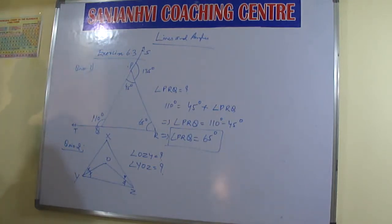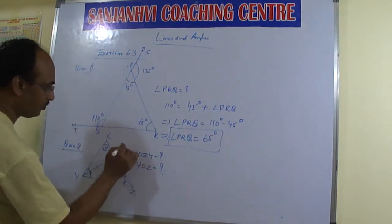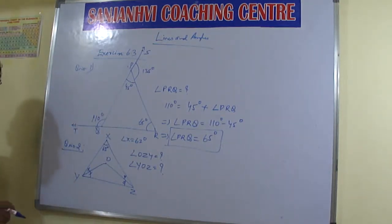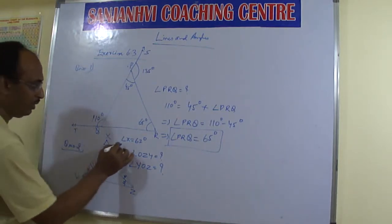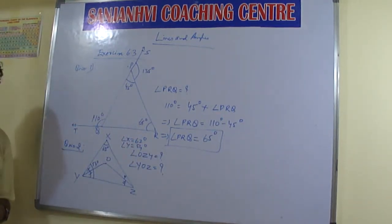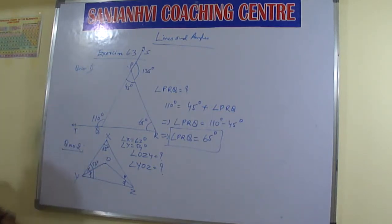We are given that angle X equals 62 degrees and angle Y equals 54 degrees. Since YO and ZO are the angle bisectors of angles Y and Z respectively, they divide each angle into two equal halves.